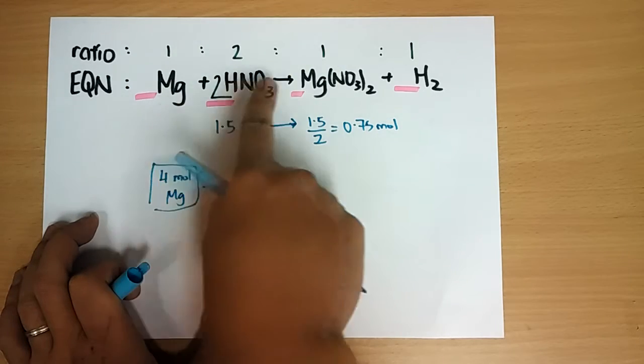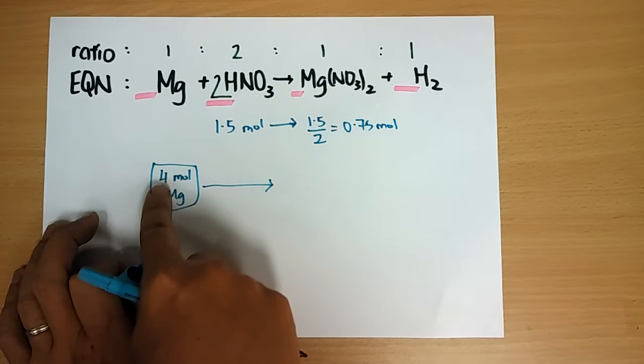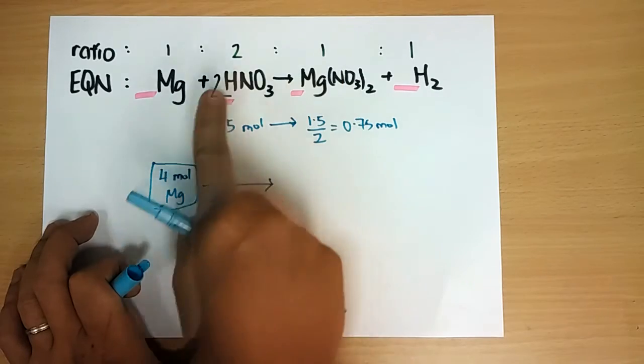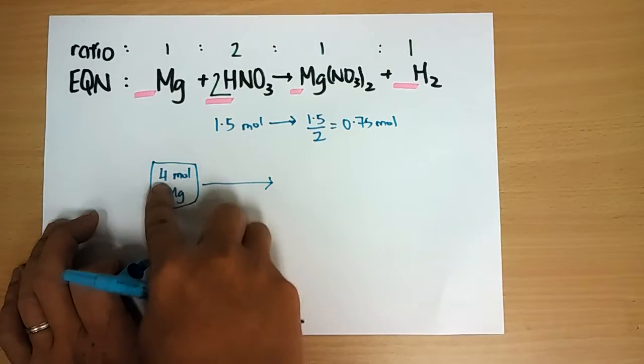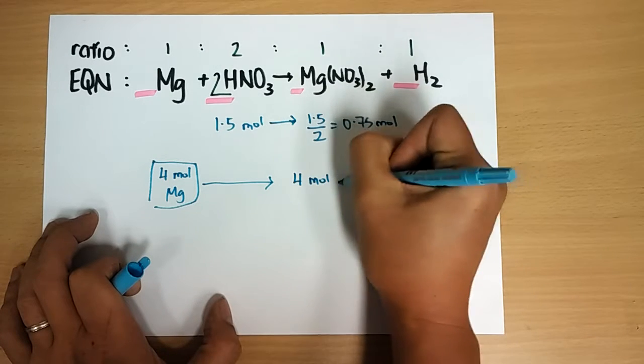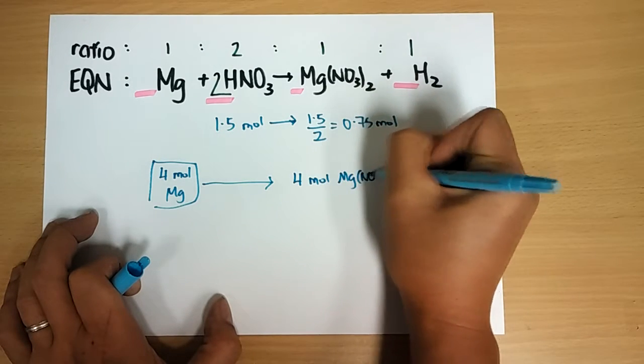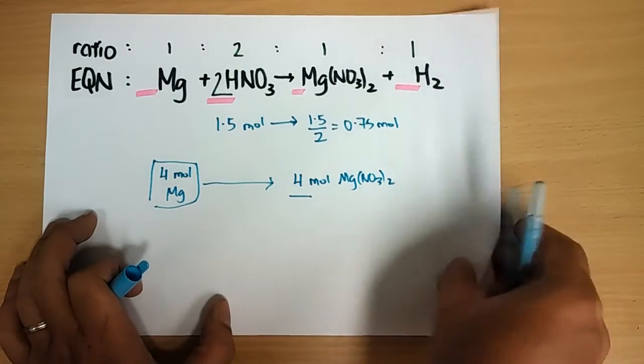1 mole of magnesium produces 1 mole of magnesium nitrate based on the general ratio. So 4 moles will give you 4 moles of Mg(NO3)2. So the answer is 4.